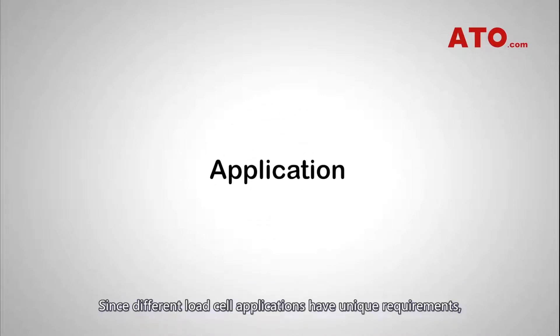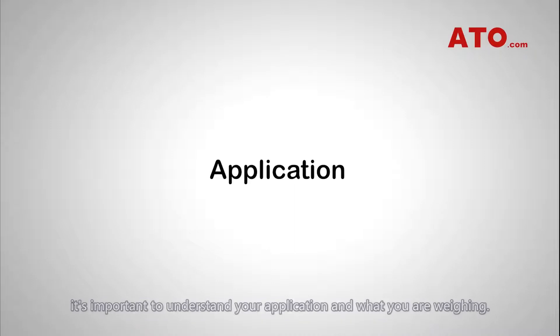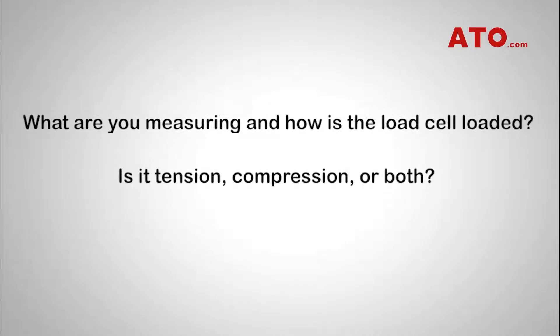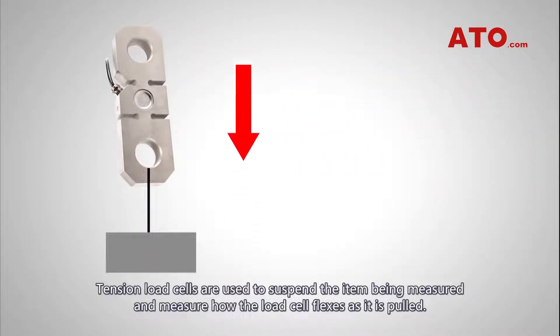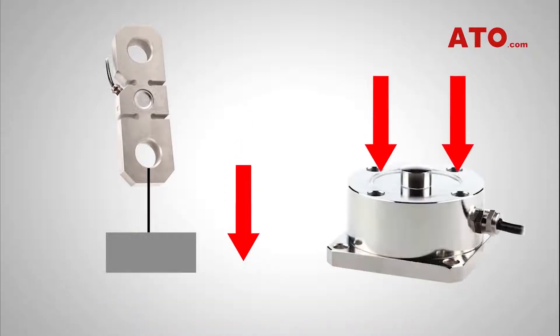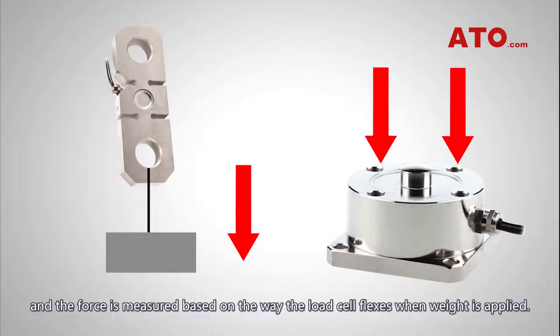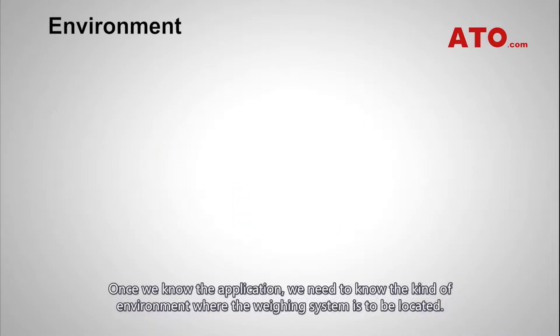Since different load cell applications have unique requirements, it's important to understand your application and what you are weighing. What are you measuring and how is the load cell loaded? Is it tension, compression, or both? Tension load cells are used to suspend the item being measured and measure how the load cell flexes as it is put under load. Compression load cells do just the opposite — force is applied directly to them and the force is measured based on the way the load cell flexes when weight is applied.